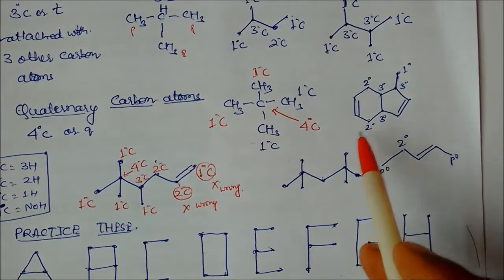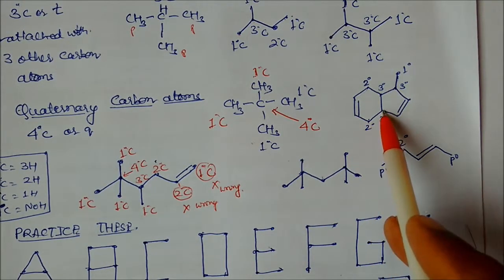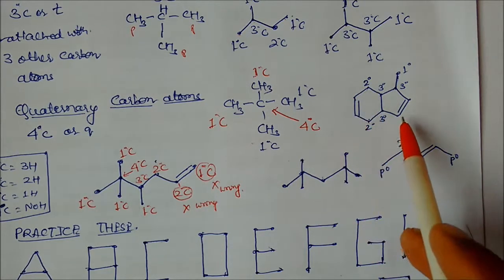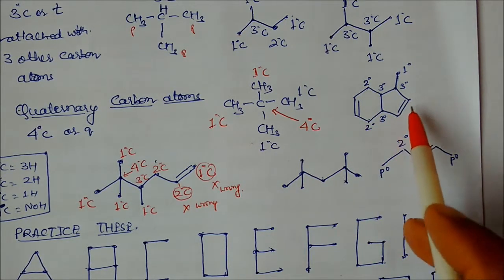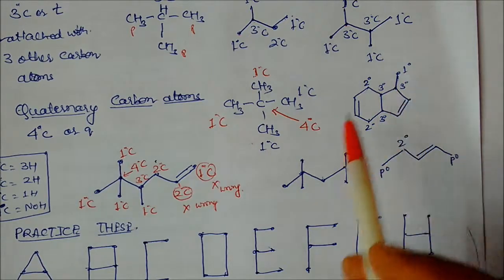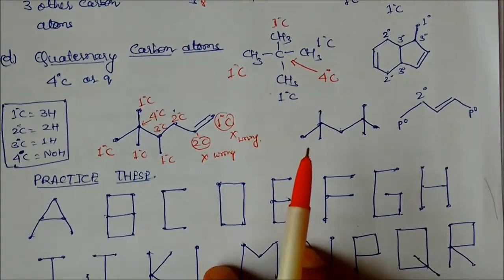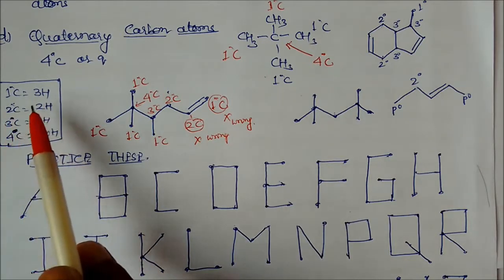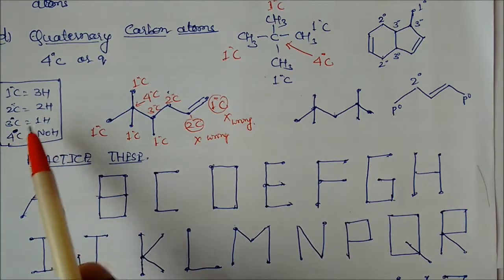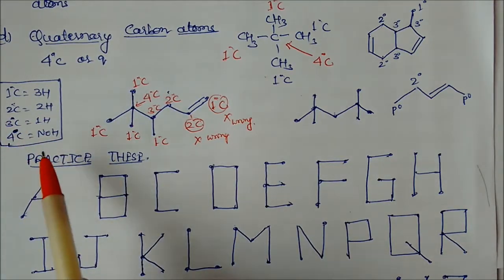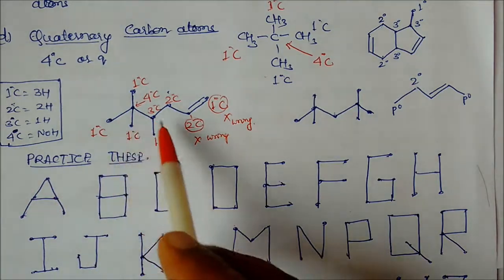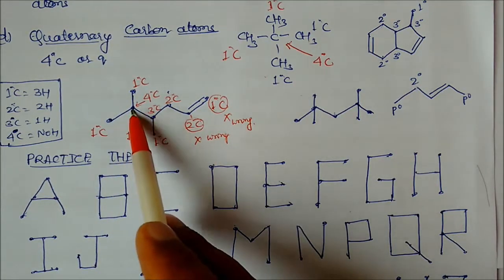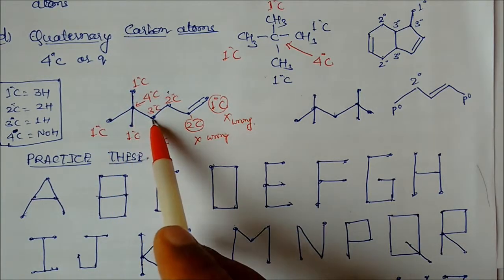To summarize the rules: primary carbon has three hydrogens, secondary carbon has two hydrogens, tertiary carbon has one hydrogen, and quaternary carbon has no hydrogen. You can see one more example here with primary carbon, quaternary carbon, primary carbon, and secondary carbon all identified.